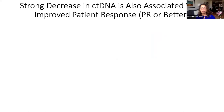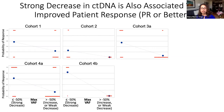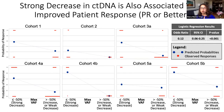Finally, we also observed that a strong decrease in CT-DNA is associated with improved patient response, defined as partial response or better, based on the two-level VAF percent change group. The downward sloping dashed lines for each cohort show that the predicted probability of achieving a partial response or better declines in patients who had an increase or weak decrease in CT-DNA. Logistic regression analysis of the aggregate dataset revealed an odds ratio of 0.12, demonstrating a strong reduction in the odds of achieving partial response or better in patients who had an increase or weak decrease in CT-DNA.